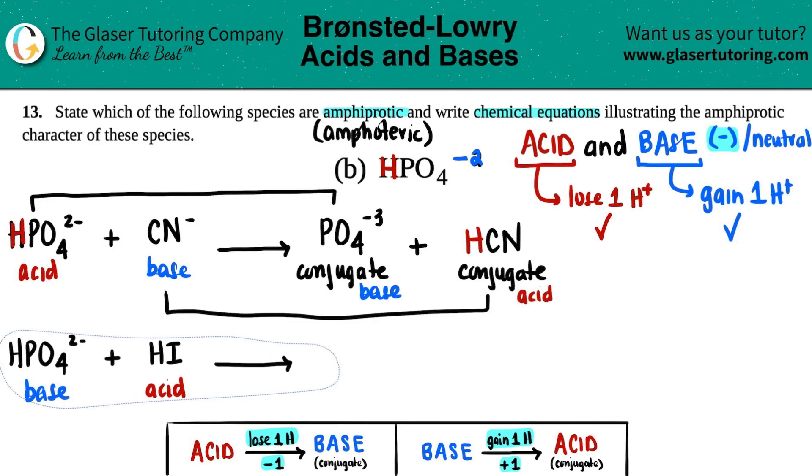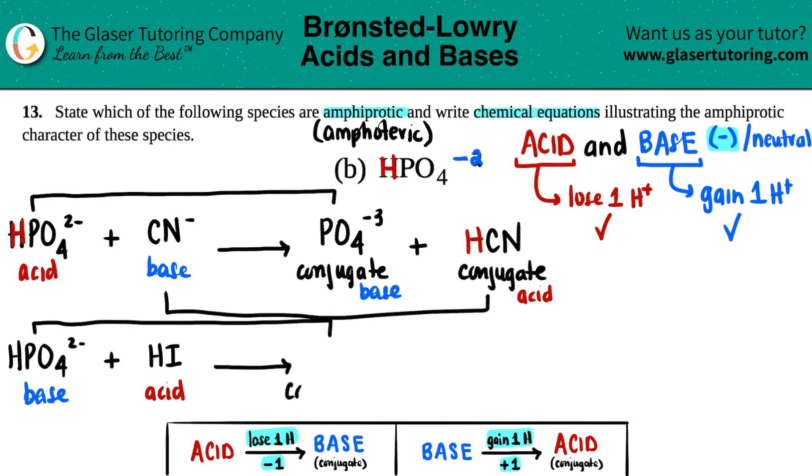Now we just have to do the same thing but on the flip side for the bottom one. Now you're starting off with HPO4 being a base, so bases will always turn into their conjugate acids. And then HI being an acid will always turn into its conjugate base. Now we just got to figure out what those two are.